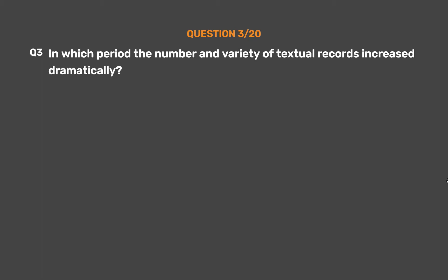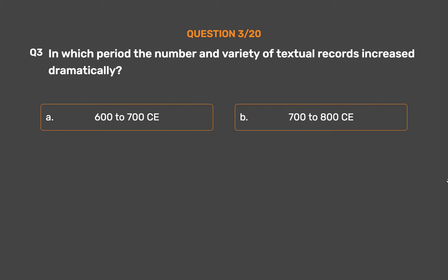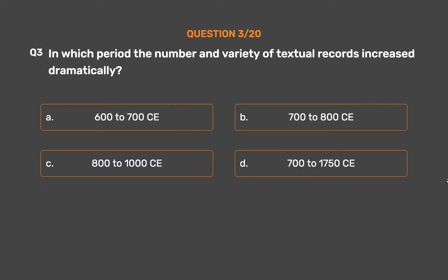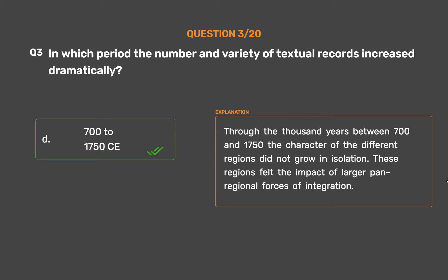Question 3: In which period did the number and variety of textual records increase dramatically? Option A: 600–700 CE. Option B: 700–800 CE. Option C: 800–1000 CE. Option D: 700–1750 CE. The correct answer is Option D: 700–1750 CE. Through the thousand years between 700 and 1750, the character of different regions did not grow in isolation — these regions felt the impact of larger pan-regional forces of integration.